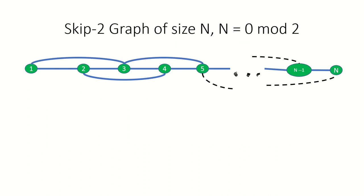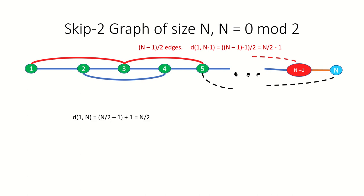If n is even then we can get to the penultimate vertex in n minus 2 over 2 steps, treating it as the last vertex in a graph of n minus 1 or odd vertices. Now to get to the ultimate vertex takes another step no matter what we do, so if n is even the distance between the first and last vertex is just n over 2 minus 1 plus 1, or n over 2.